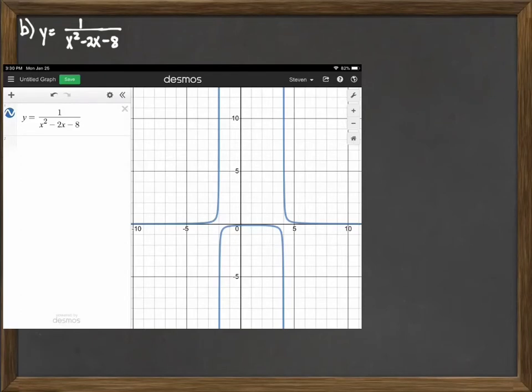We see that we have two asymptotes. One occurring here on our graph at negative 2, right here at negative 2 we have an asymptote. And then we have a second vertical asymptote over here at 4. Those are the values that actually make that denominator 0. If you were to factor that denominator it would be x plus 2 and x minus 4.